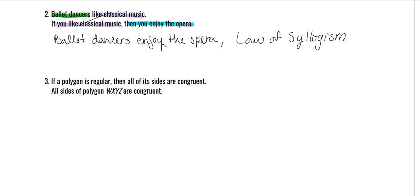'If a polygon is regular, then all its sides are congruent. All sides of polygon WXYZ are congruent.' This just says a polygon is congruent — it doesn't give me the 'if a polygon is regular' part. For the Law of Detachment, it has to be yellow, pink, yellow, pink. For the Law of Syllogism, I'd need another sentence. So this is actually invalid — you can never state the conclusion before the hypothesis.